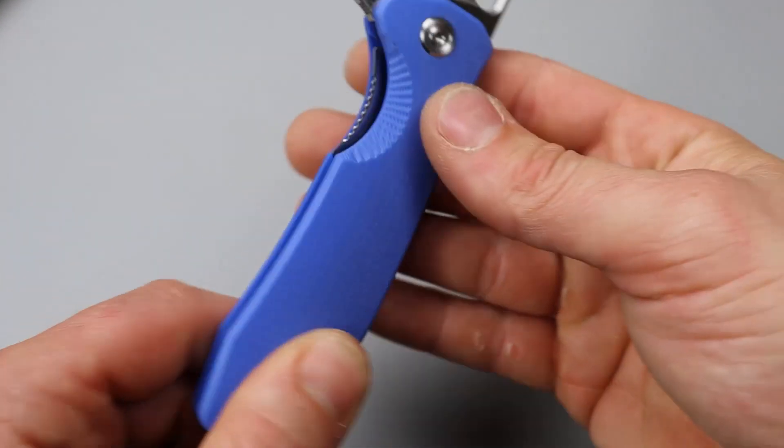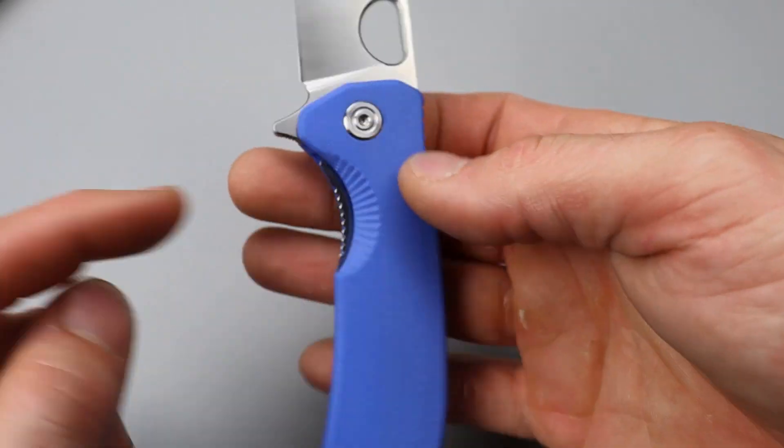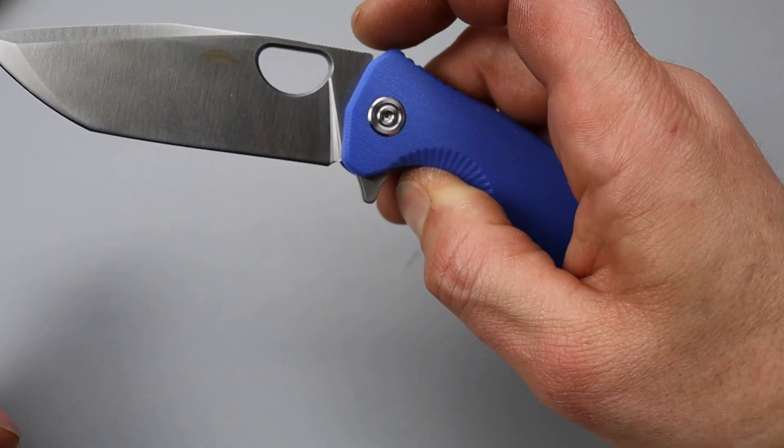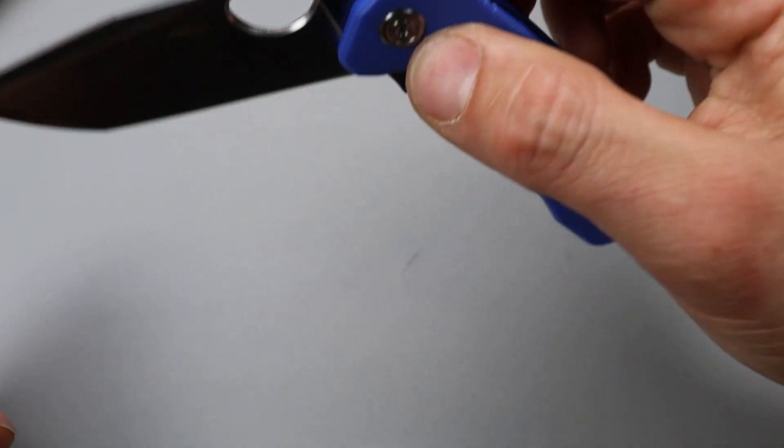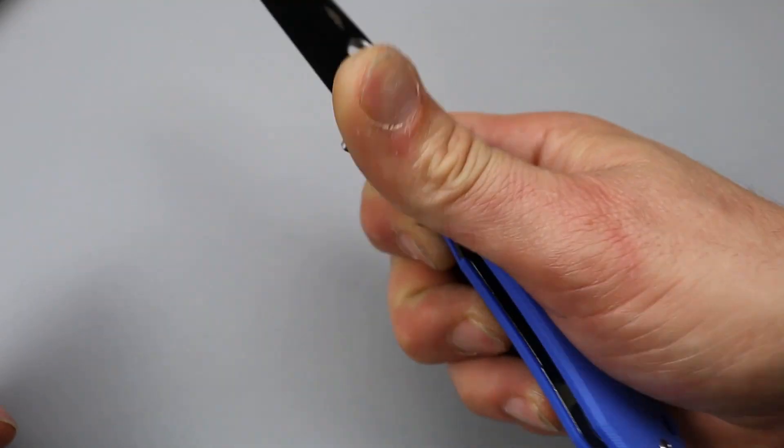Whether it's your reverse flick or the thumb flick, access to the lock bar, lots of access there. So, very easy to disengage and then it's very smooth on the drop with the bearings.